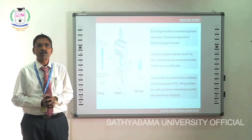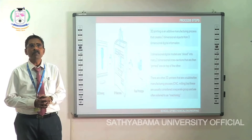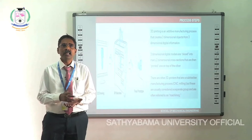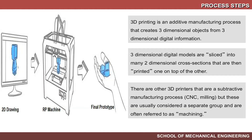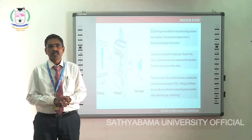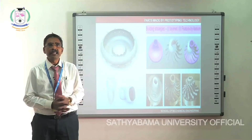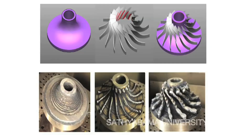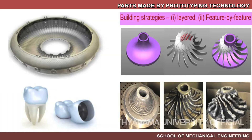3D printing is an additive manufacturing process that creates three-dimensional objects from digital information. The model is sliced into layers corresponding to the required cross sections, then printed one layer on top of the other. There are also flat and subtractive processes like CNC milling. Examples of parts made by printing technology include blades, dental components, and solid models converted through machinery into a final prototype.